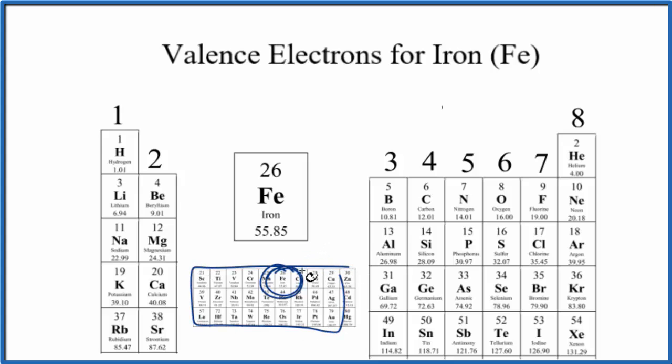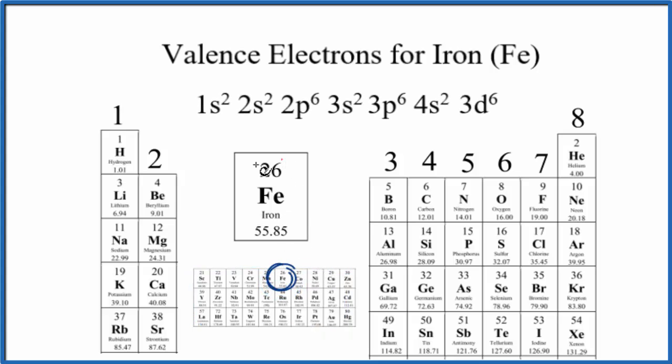So let's take a look at the electron configuration for iron. Iron here on the periodic table has 26 protons. That's its atomic number. Since it's neutral, it has 26 electrons. And we fill them out in this electron configuration here for iron. Sometimes you'll see the 4s2 put after the 3d6. Either way is okay.